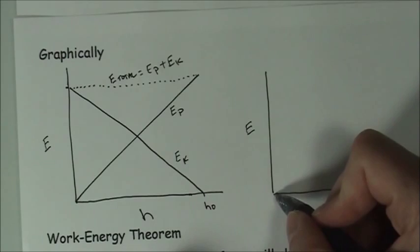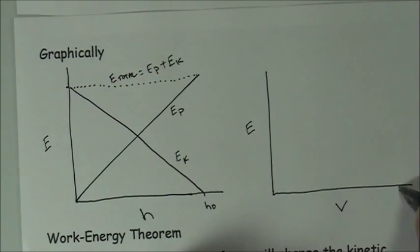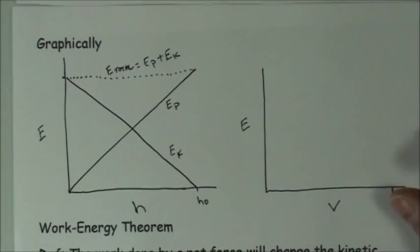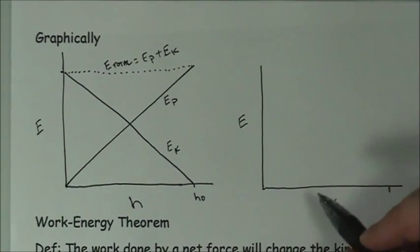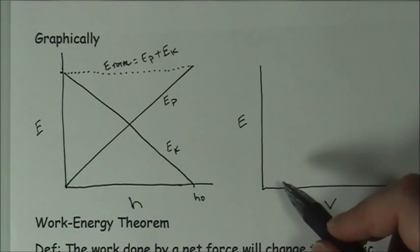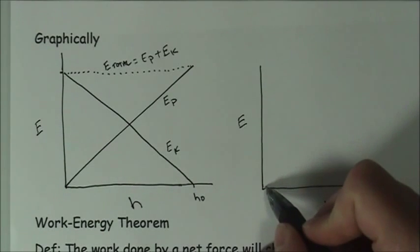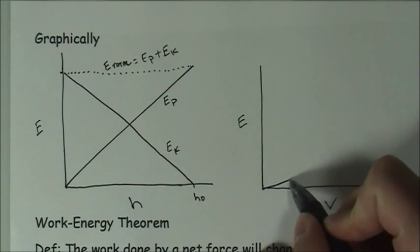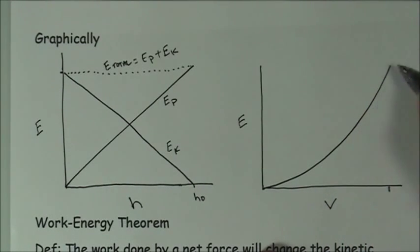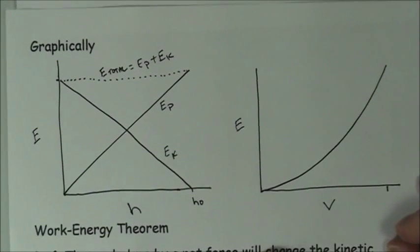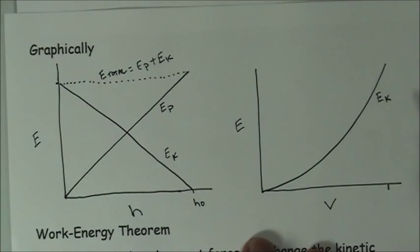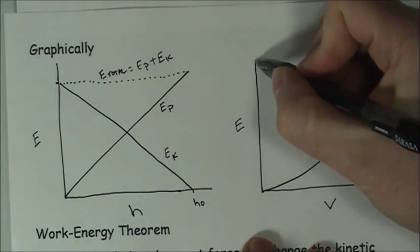Energy as a function of velocity is a little bit more complex. You notice that the formula for kinetic energy was one-half mv squared. So as the velocity increases, the amount of energy increases dramatically. So this guy actually curves up a little bit, kind of like a parabola. And that is EK.